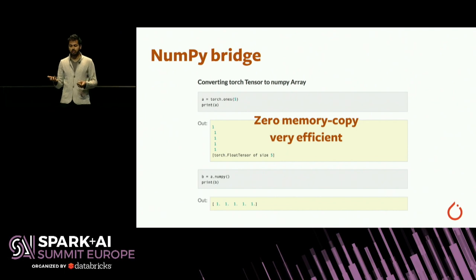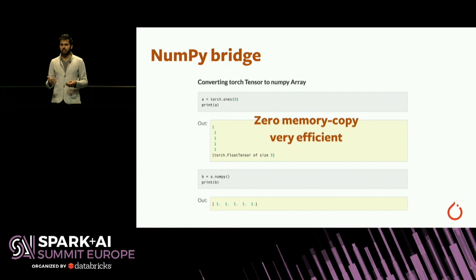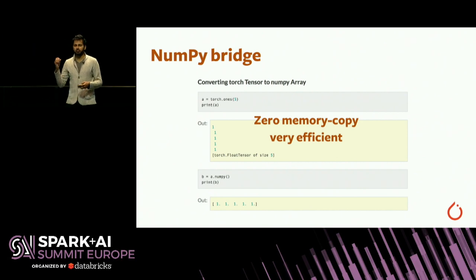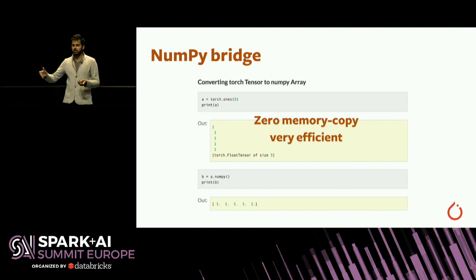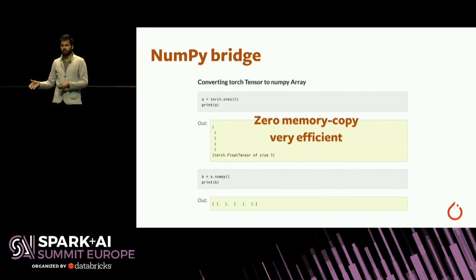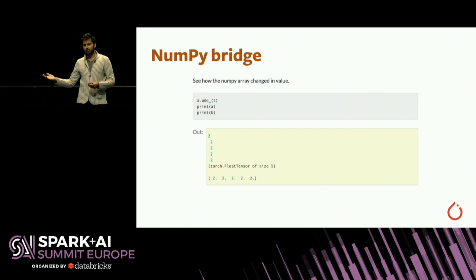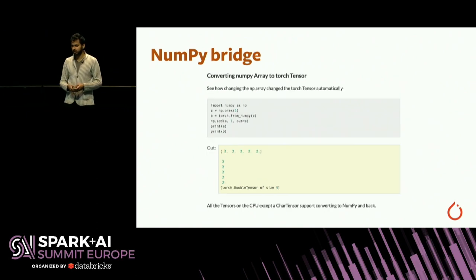The zero-memory-copy NumPy bridge means you can convert PyTorch tensors to NumPy arrays and vice versa for almost free. So if you're doing your deep learning with PyTorch but need certain functionality that's in scikit-learn or the scipy package, you can dip down into that ecosystem for parts of your operations. And if you have a NumPy array, you can convert it back to a PyTorch tensor as well.